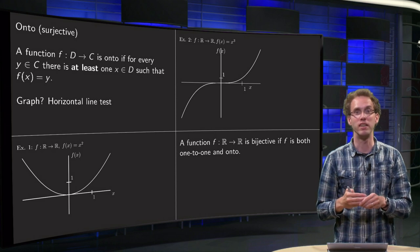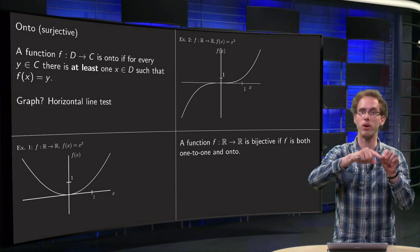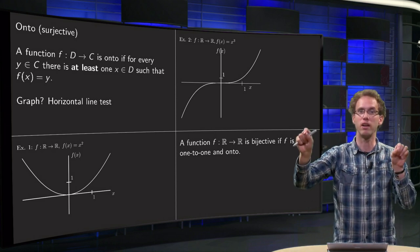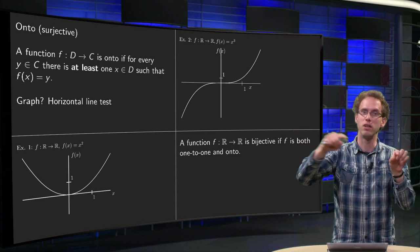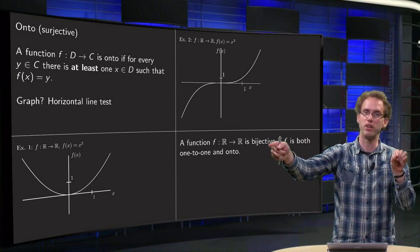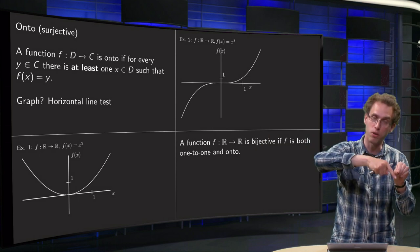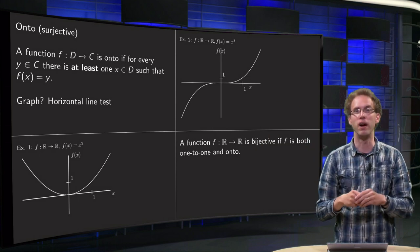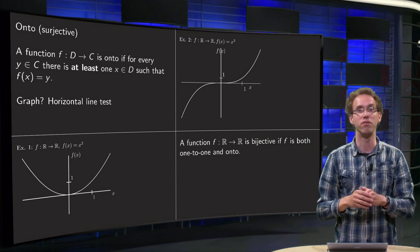And now you also see why bijective is important, because if all x's and y's are glued together on a one-to-one basis, you can go with f in one direction and then in that case you can go back. So if your function is bijective, then in that case you can find an inverse.